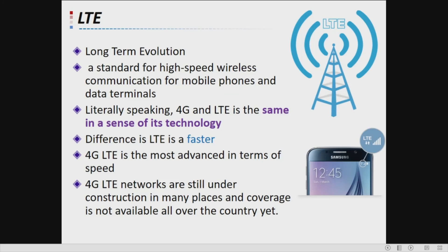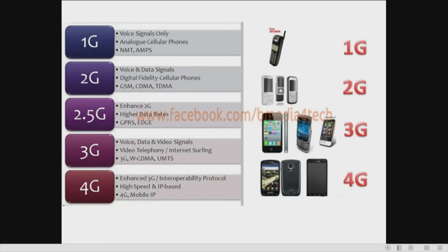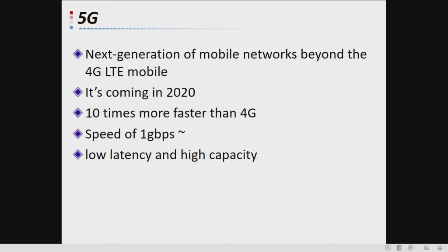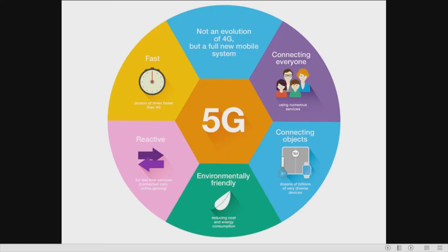At the end of this video, you should be able to describe the generations of the cellular network. We covered 1G, 2G, 2.5G, 3G, and 4G. Now we have 5G — the next generation after 4G LTE mobile, which is already here as of 2020. It is 10 times faster compared to 4G, though coverage is still not wide. The speed is up to 1 gigabit per second, with very low latency and high capacity. It is not an evolution of 4G but a fully new mobile system.